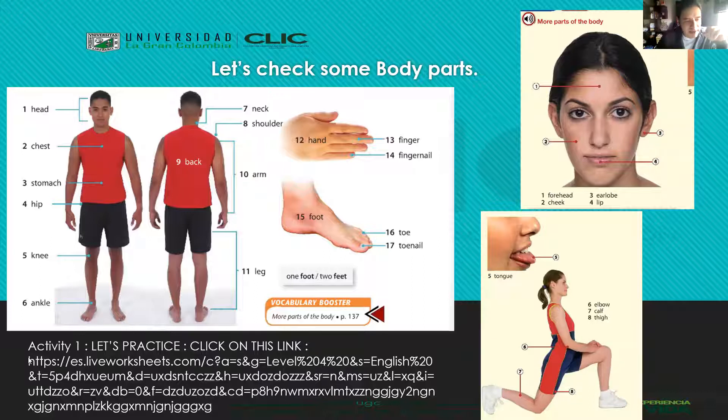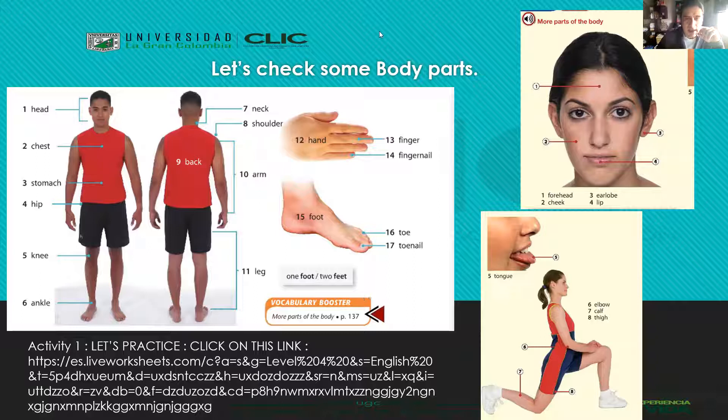So we have to do the first activity - activity number one, guys. You have to click on the link. Van a darle click a este link que ven acá, entonces lo copian o le dan click de una vez. Once you copy the link, this page will appear. Consult the vocabulary we just saw to complete this activity.